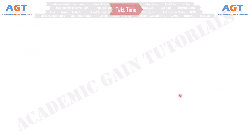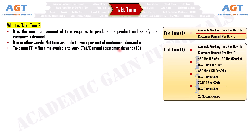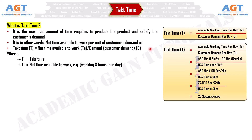Number 12: Takt Time. Takt Time is the maximum amount of time required to produce a product and satisfy customer demand — in other words, the net time available to work per unit of customer demand. Takt Time equals net time available to work divided by customer demand. In the equation, T equals Takt Time; TA equals net time available to work (e.g., 8 hours per day); D equals customer demand (e.g., 1,000 units required per day).